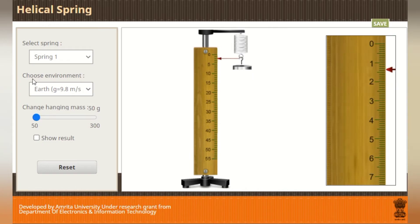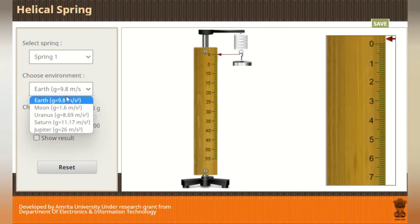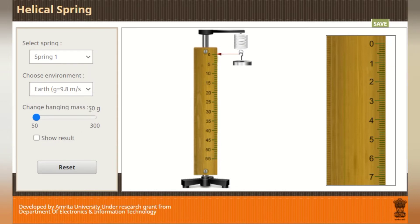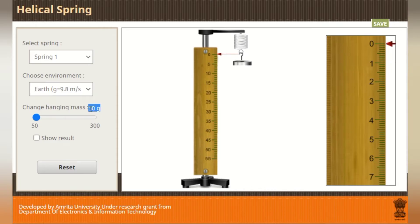After that, we have an option to choose the environment. In the environment, we choose Earth. After that, we have the option to change hanging masses. We start with 50 grams, which is the mass when no additional load is attached.